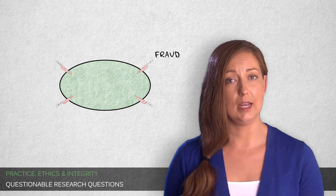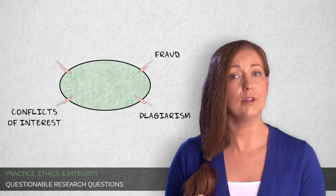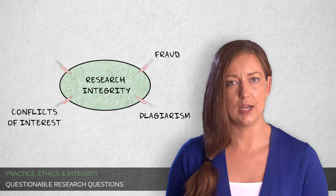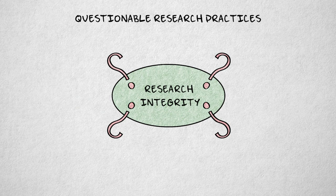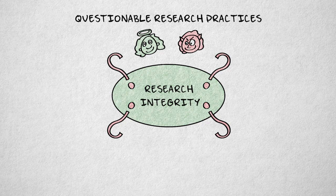Fabrication and falsification of data, plagiarism, and unreported conflicts of interest are considered outright violations of research integrity. But there is also a gray area of practices referred to as questionable research practices, or QRPs. Questionable research practices refer to practices that are acceptable if they're implemented objectively and responsibly, but they can be abused to obtain more favorable results.